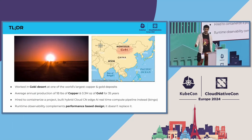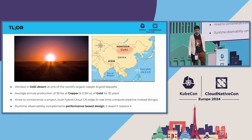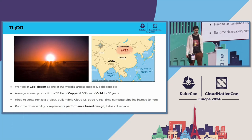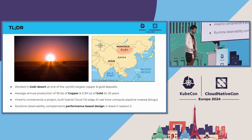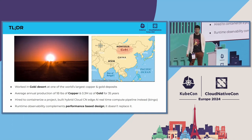So TL;DR: I got hired to do some DevOps pipelines, and for some reason I ended up in the desert in Mongolia, just north of China, in one of the biggest copper deposits in the world. I ended up building a hybrid cloud, cloud-native, edge AI earthquake detection system.